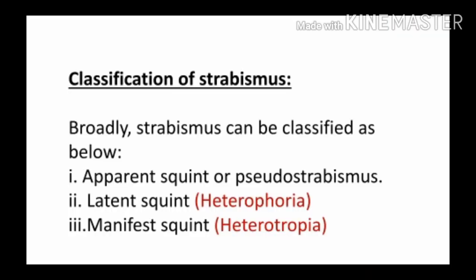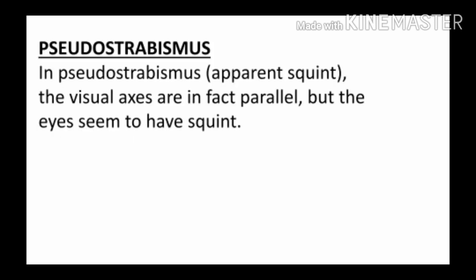Squint or strabismus is classified into three types. First is apparent squint, also known as pseudo strabismus. Second is latent squint or heterophoria. The third one is manifest squint or heterotropia. In pseudo strabismus, the visual axes are in fact parallel but the eyes seem to have a squint.